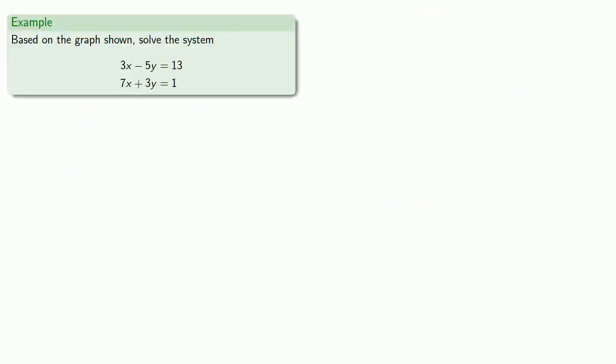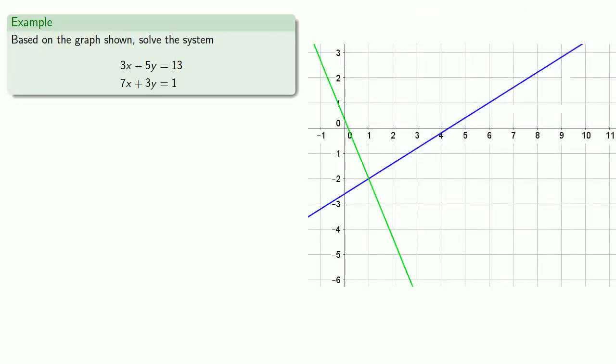For example, suppose I have the graph of two equations. How do we know these are the graphs of these two equations? Because they've been labeled.